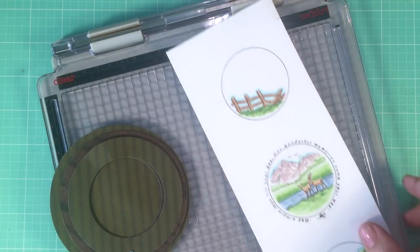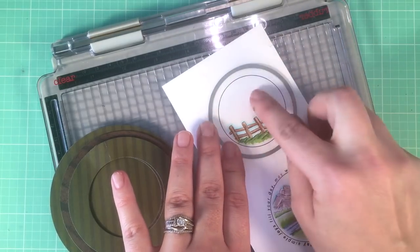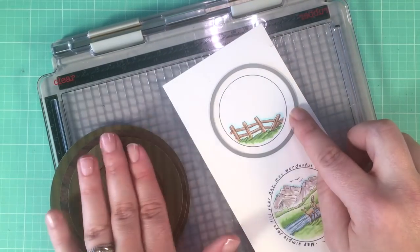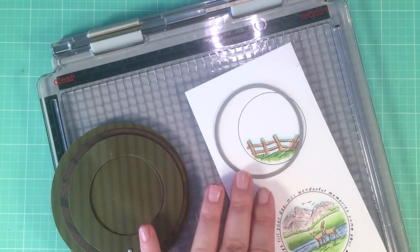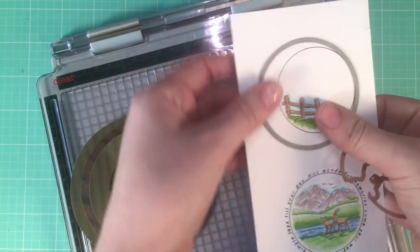So first thing I need to do is cut out my circles so that I can fit them onto this template, and then I'm also going to die cut the opening so that I can stack them on top of each other.